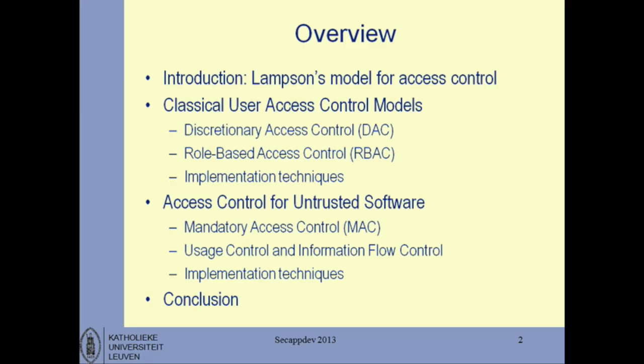We'll look at two things essentially. First, how do you choose the rules you want to enforce? Access control is informally the rules about who is allowed to do what. We'll look at access control models — what security properties you want and what the desirable rules are for the kind of application you're looking at. Classic access control models are well understood and useful, but typically not exactly what you want when developing an application.